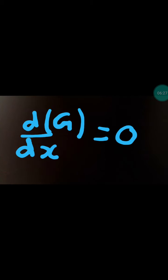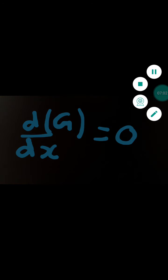One more example: d/dx of G, where capital G is the universal gravitational constant with value 6.67 times 10 to the power minus 11 Newton meters squared per kilogram squared. Since G is a constant, its differentiation with respect to x is again 0. There are some questions given to you in the sheet — try to solve them.